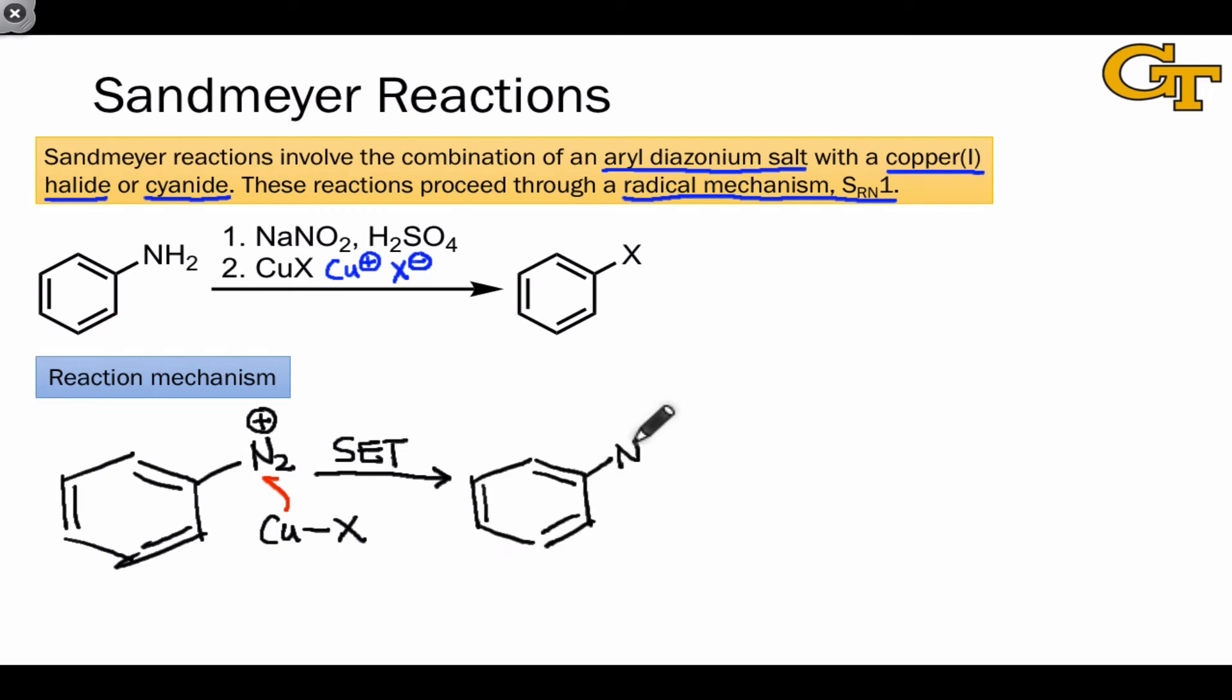Because the electron is negatively charged, this turns the diazonium into a neutral diazo radical with this structure. This step also generates a copper(II) species, with copper and X still bound, but the copper now with a positive formal charge.